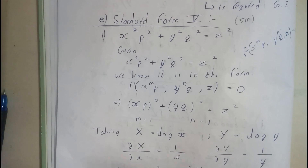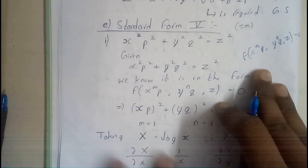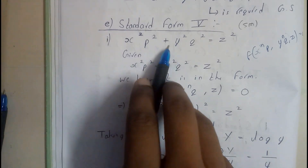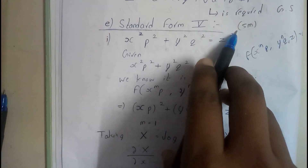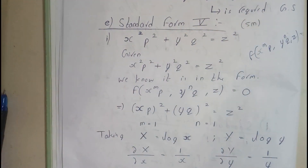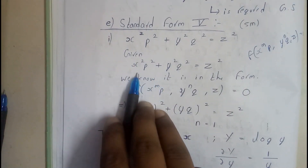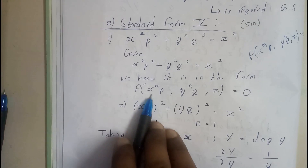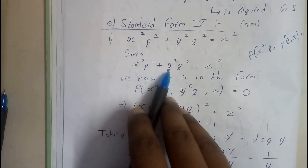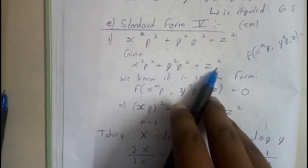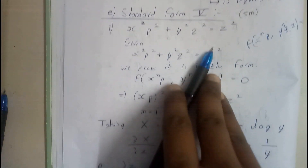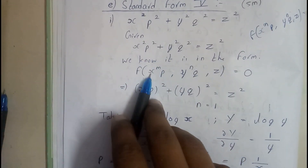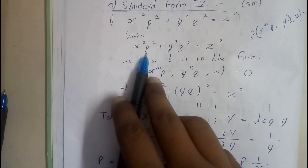The first example is: x²p² + y²q² = z². From this question, it is in the form of x^m · p + y^m · q = z². By comparing them, we can identify the powers.